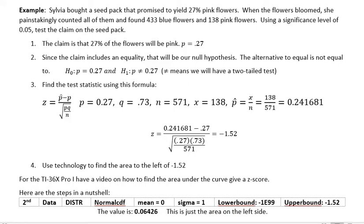Hi, it's Carly McEvoy. I want to do an example of a hypothesis test problem using a proportion. So Sylvia bought a seed pack that promised to yield 27% pink flowers. When the flowers bloomed, she painstakingly counted all of them and found 433 blue flowers and 138 pink flowers. Using a significance level of 0.05, test the claim on the seed pack.